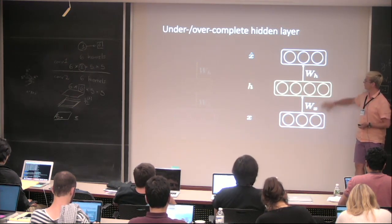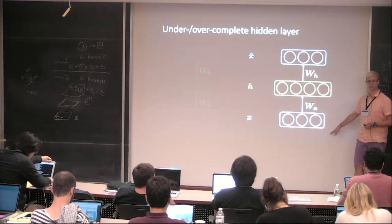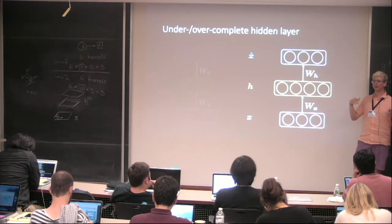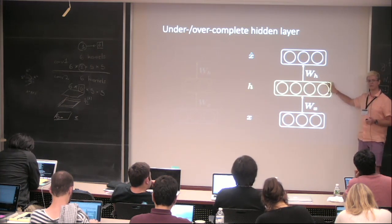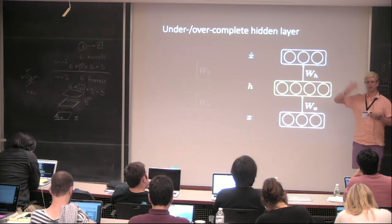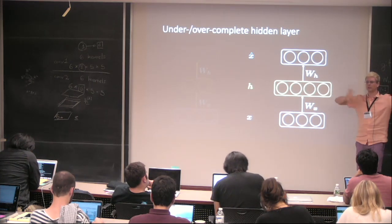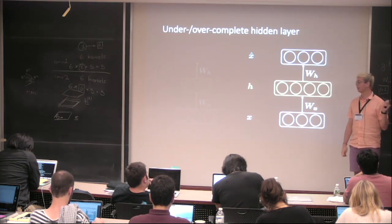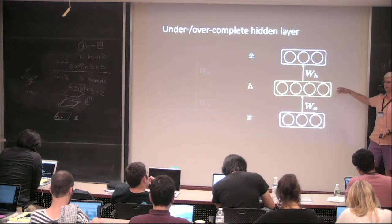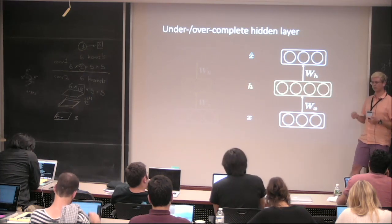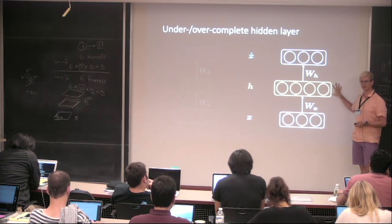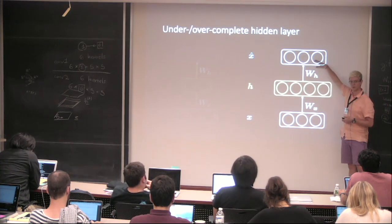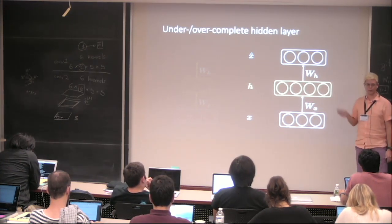Another option is to apply noise to the input and try to reconstruct the original image without the noise — a denoising autoencoder learning to remove external noise. A larger representation makes it easier to push information around. Other variants include contrastive autoencoders and variational autoencoders, which sample from a distribution. All these techniques introduce some constraint over the hidden representation, even if it is larger than the input.